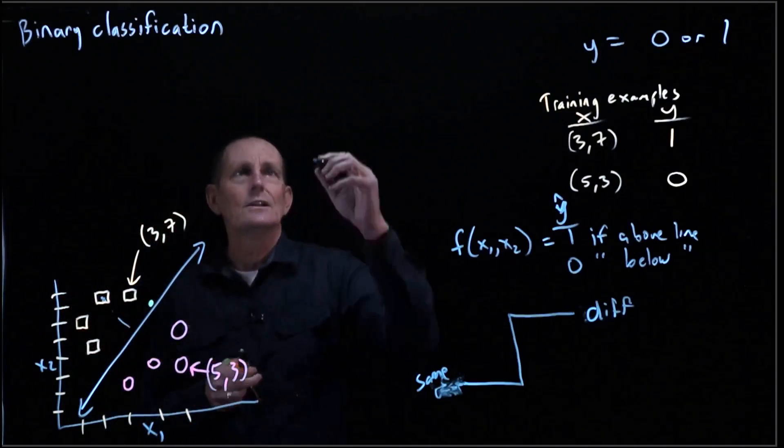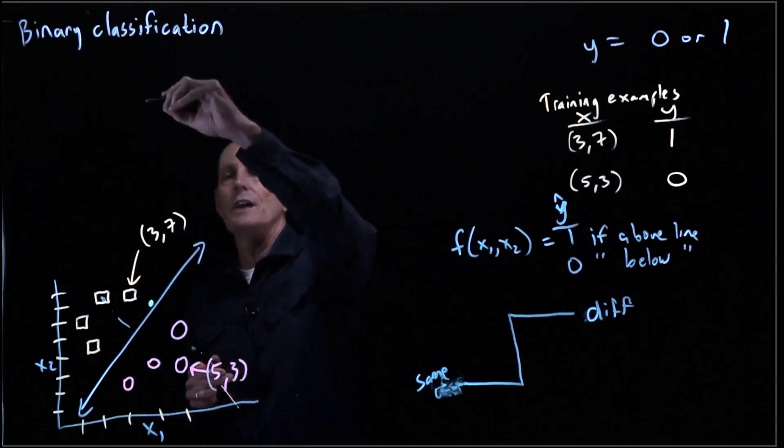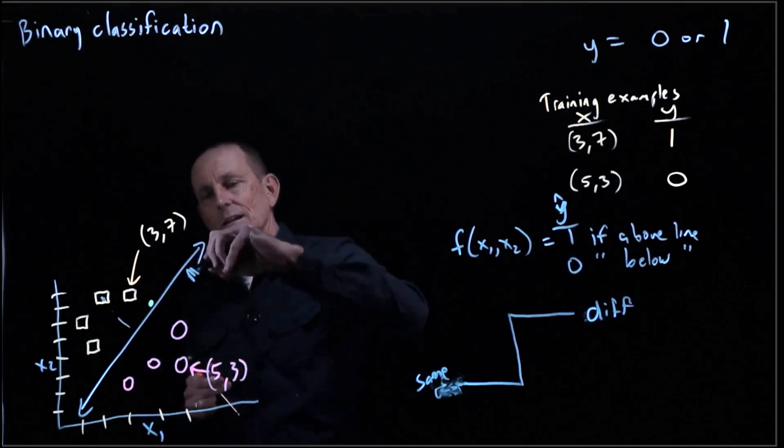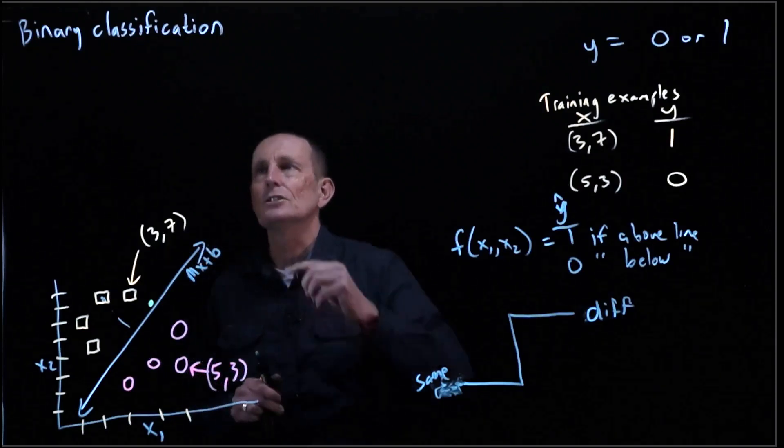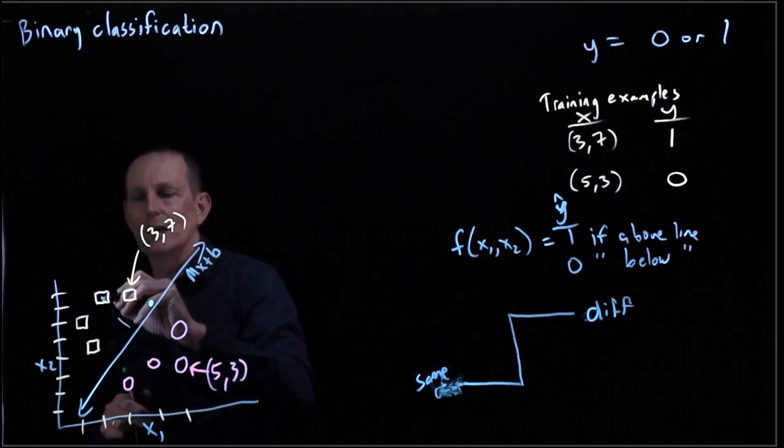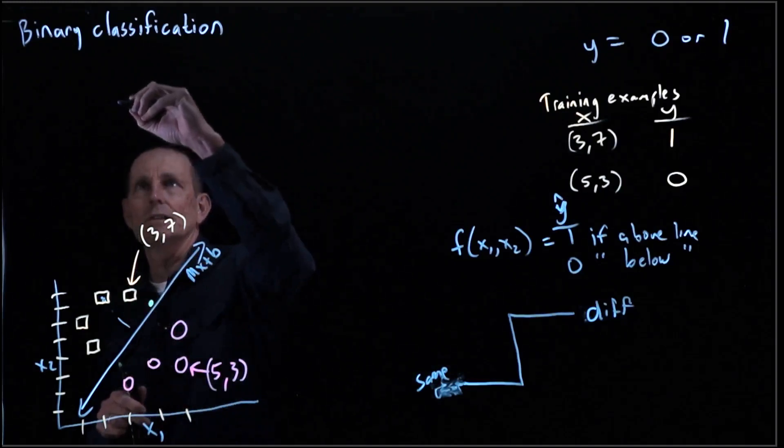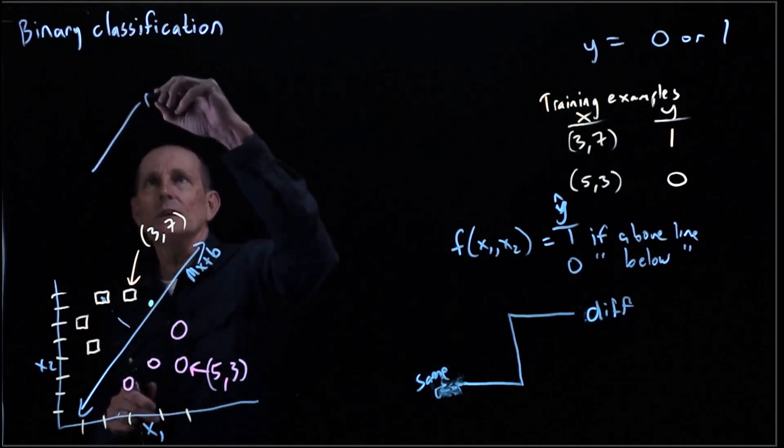So let's suppose that this line is mx plus b. So we can go ahead now and look at a simple example. We've got mx plus b.